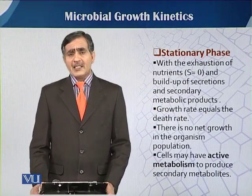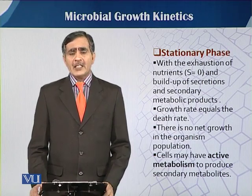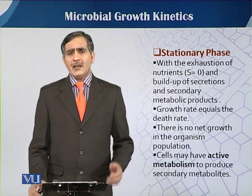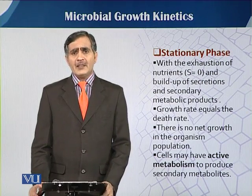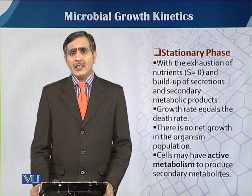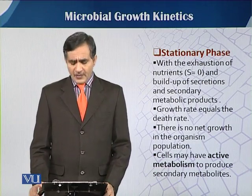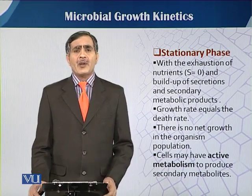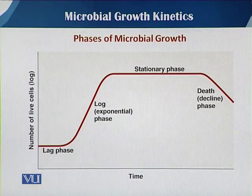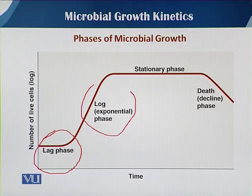The third stage is the stationary phase. With the exhaustion of nutrients — because during the exponential phase there is maximum utilization of the substrate — when there is any deficiency in nutrients, it affects the birth rate or mitotic divisions of the cells. Then there is a stage when the ratio between birth and death becomes equal, and that stage is called the stationary phase. In this stage, cells remain active and their metabolism is mostly active, but this is also the stage when their secondary metabolites are produced. In this diagram, you can see the different phases: lag phase, exponential phase, stationary phase, and the last is the decline phase.